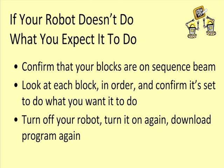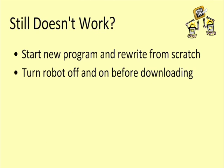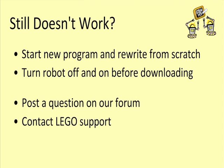I'm also going to ask you to avoid panicking if your program doesn't seem to be working. If your robot program isn't working and you haven't put an image block at the very end or put two of them together, then do the following: first, confirm that all of your blocks are placed on your main sequence beam — remember only blocks sitting on that beam are run. Then look closely at your code, checking each block to make sure it's set to do what you think it should. If your code looks good, try turning off your robot, turning it on again, and downloading the program again. If it still doesn't work, start a new program and try rewriting from scratch. Remember to turn your robot off and then on before downloading that new program. Finally, if you're still having trouble, remember you can always post questions on the forum or contact LEGO support.